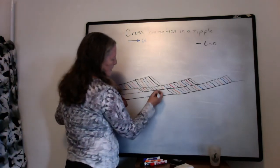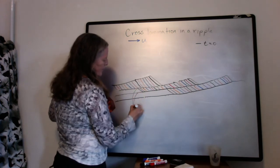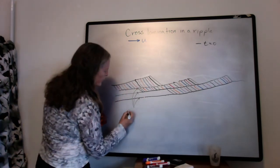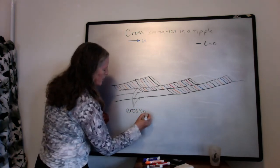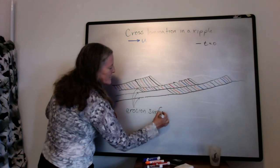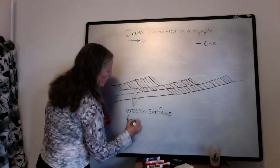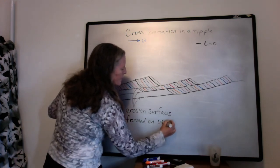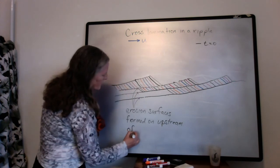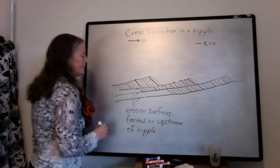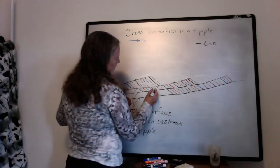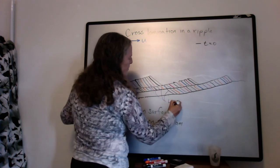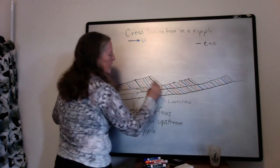So if we look at it more specifically, each one of these layers that are separating the lamina are the erosion surfaces or micro-unconformities that form on the upstream side of the ripple that migrated through the area first.